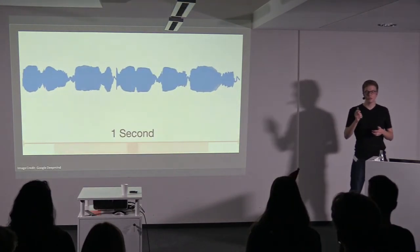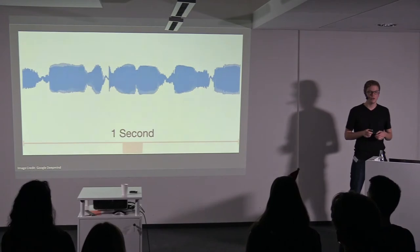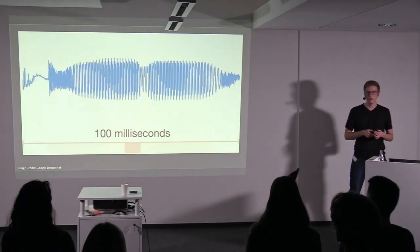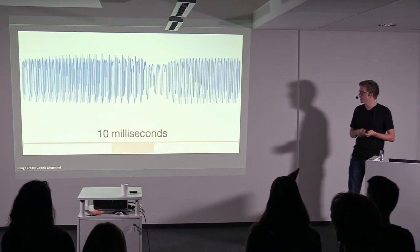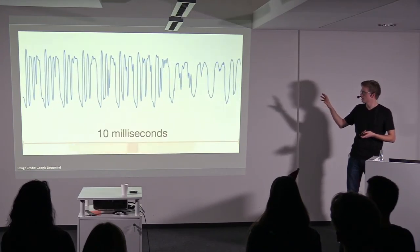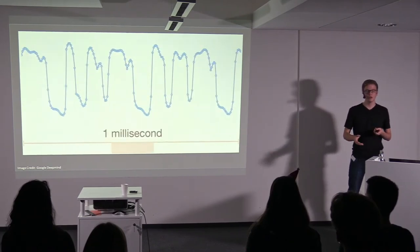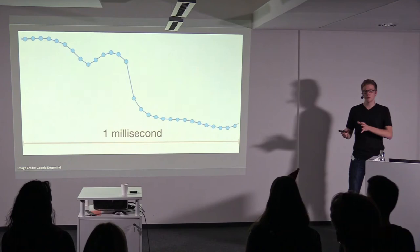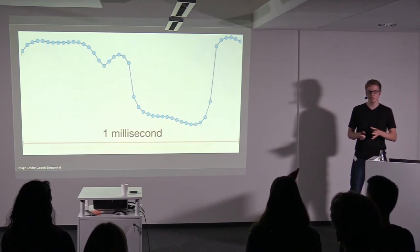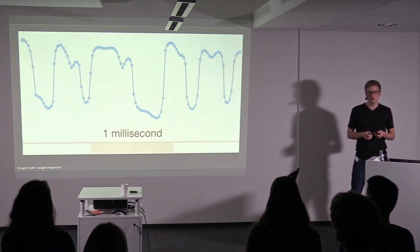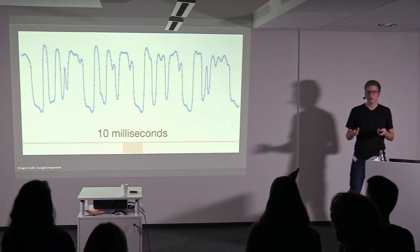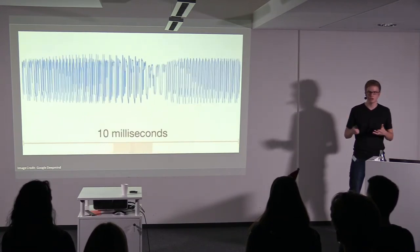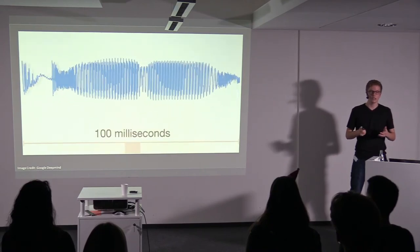Another example you all have on your phones if you're using Android is Google DeepMind's WaveNet - a model where some label information is combined with the ability to generate speech. This is basically the model powering the text-to-speech interface on your phones, and it is also mostly learned in a completely unsupervised way.